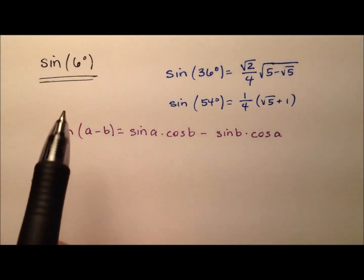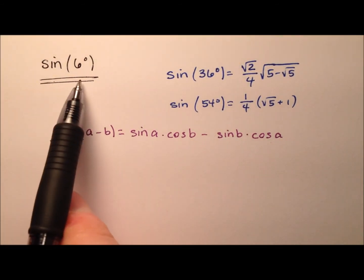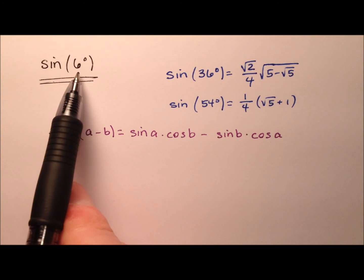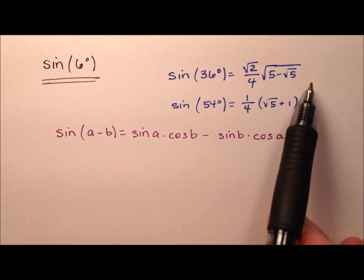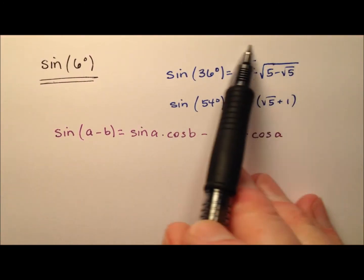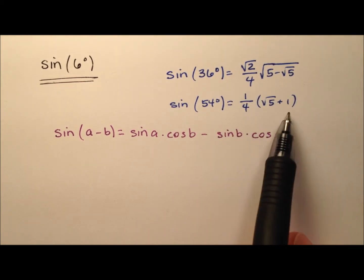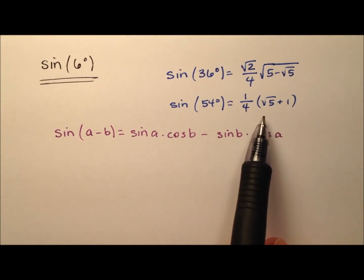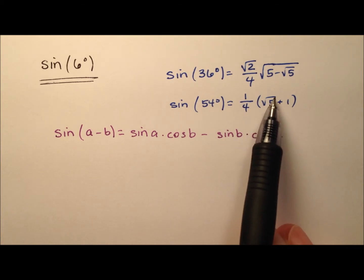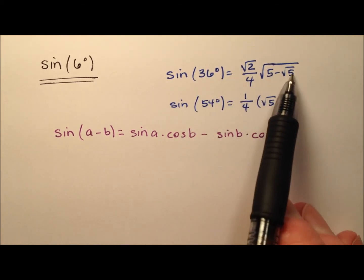In this video, I'm going to walk through a series of steps and find the exact value for the sine of six degrees. I'm going to use two other values here, the sine of 36 and the sine of 54, both of which I've worked out in other videos. Those videos have links down in the video description here, so you can go see those if you like.